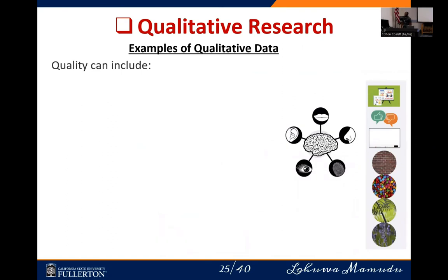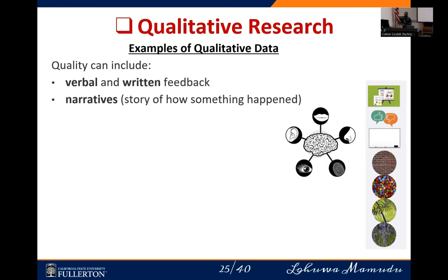Now let's look at examples of qualitative data. We have verbal or written feedback — sometimes you want feedback from patients diagnosed with a specific disease, or feedback from individuals who took a specific COVID-19 vaccine like Moderna, Johnson & Johnson, or Pfizer, to know whether it had any complications. These are all examples of qualitative research data. We also have narrative — if you are sick and go to the hospital, you start narrating your story: telling the doctor you had a headache and other symptoms. Based on your narrative, the doctor can tell what you may be diagnosed with.